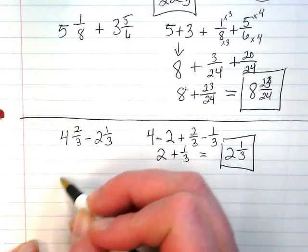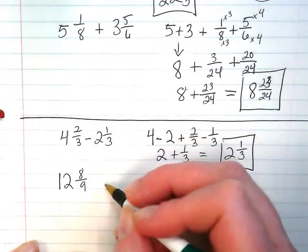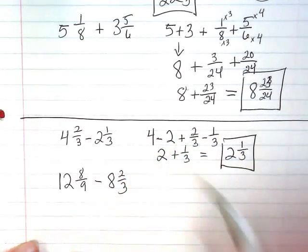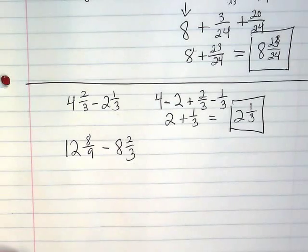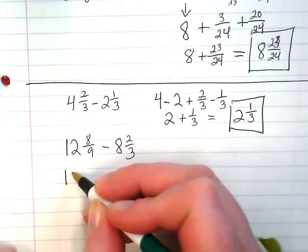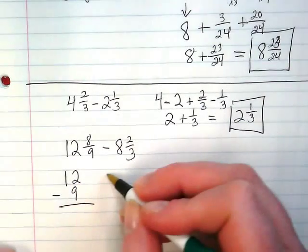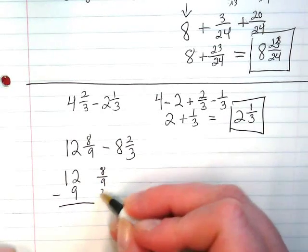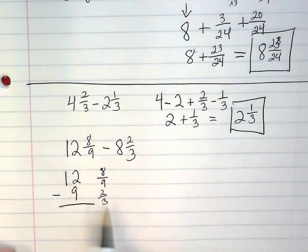Another example, 12 and 8 ninths minus 8 and 2 thirds. Another way to write these is lining them up from top to bottom instead of going across like this. This might help some people. I'm going to do 12 minus 9, and the fractions are going to line up next to it. So I've got 12 and 8 ninths minus 9 and 2 thirds.